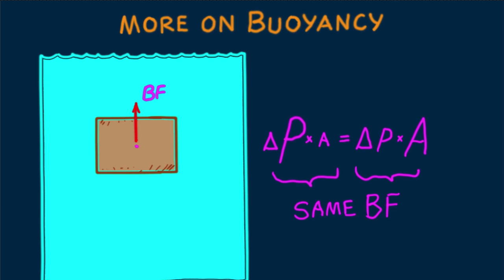Archimedes' principle bypasses this by telling us that the buoyant force equals the weight of water displaced, regardless of position. And clearly the block displaces the same amount of water, whatever its position beneath the surface.